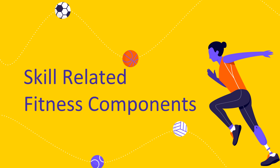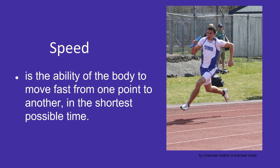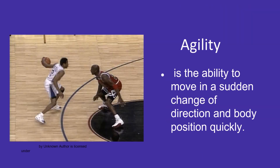Let's go to our next branch: skill-related fitness components. First is speed — the ability of the body to move fast from one point to another in the shortest possible time. As you can see in the picture, there is a man carrying a baton and running fast in baton relay. Agility is the ability to move with sudden changes of direction and body position quickly, and is widely used in basketball.